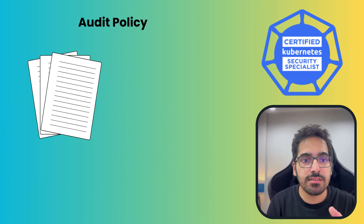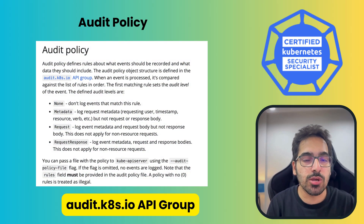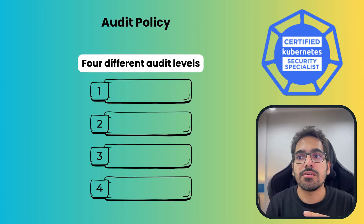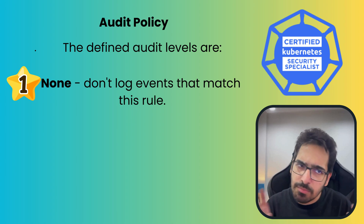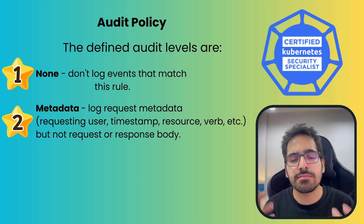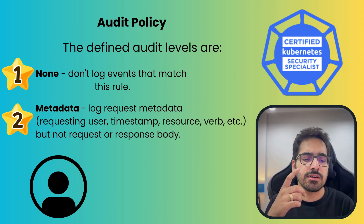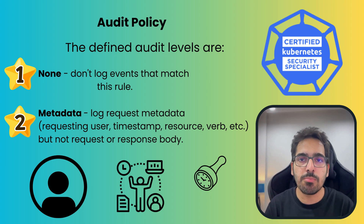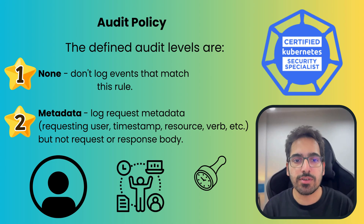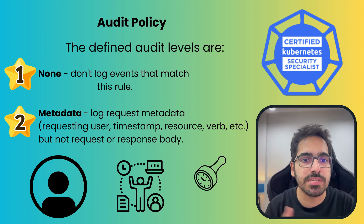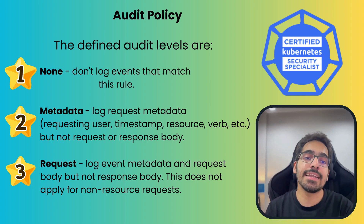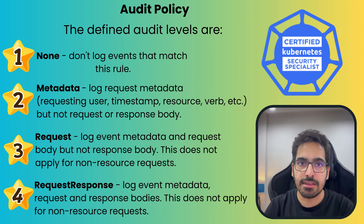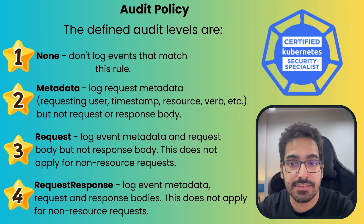Coming to the audit policy levels, every structure is defined in the audit.k8s.io API group, and there are four different levels. First is None — don't log any events matching this rule. Second is Metadata — log the user who requested the change, the timestamp, the resource, and the verb (e.g., 'get' in kubectl get pods), but without request or response body. Third is Request — metadata plus the request body, but no response.